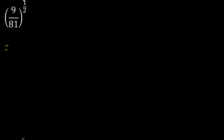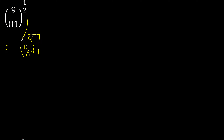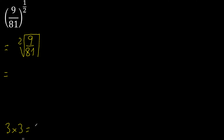The exponent is a fraction, therefore we take a root. Since the exponent is 1/2, we eliminate it and find numbers that multiply to give 9. Since 3 multiplied by 3 is 9, the square root of 9 equals 3.